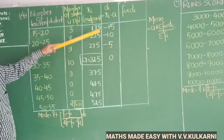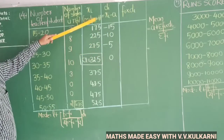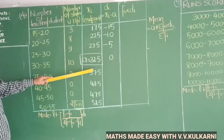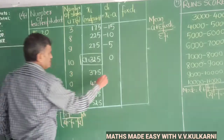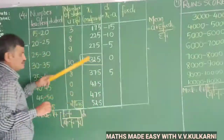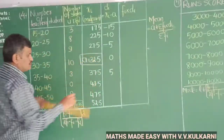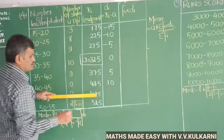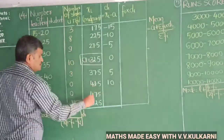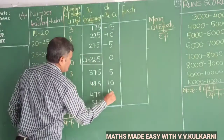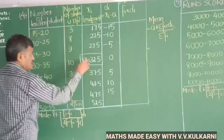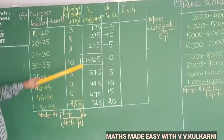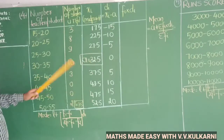Continuing the deviations: 32.5 minus 32.5 is 0, 27.5 minus 32.5 is minus 5, 22.5 minus 32.5 is minus 10, 17.5 minus 32.5 is minus 15. On the positive side: 37.5 minus 32.5 is plus 5, 42.5 minus 32.5 is plus 10, 47.5 minus 32.5 is plus 15, and 52.5 minus 32.5 is plus 20.